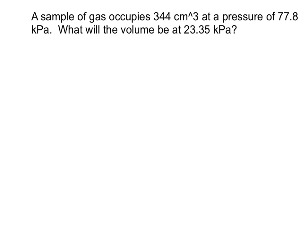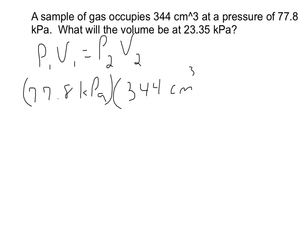So since we are using that P1 times V1 equals P2 times V2, we now simply just put in what we've already written down. We wrote down our P1 as 77.8 kilopascals, and our V1 we wrote down as 344 centimeters cubed, and that equals our P2, 23.35 kilopascals.